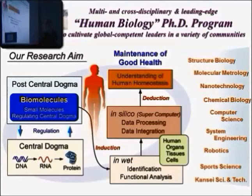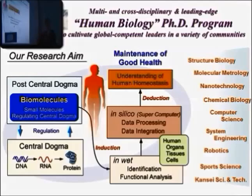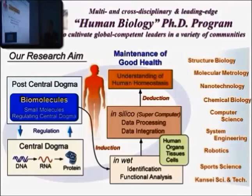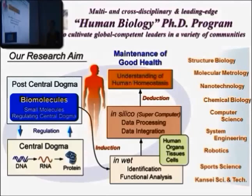We try to make a virtual human inside of the supercomputer. If we can make a virtual human in the computer, maybe this computer is very good for screening of new drugs or to study the effect of some unknown compound — something happening instead of using animals, just using virtual supercomputers and virtual human sciences. To this end, we have to integrate many kinds of research fields, such as structural biology, molecular methodology, nanotechnology, chemical biology, computer sciences, system engineering, robotics, sports science, science and technology, and so on. Therefore, we have to learn so many things.